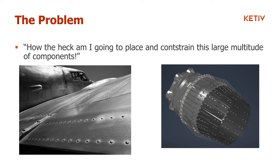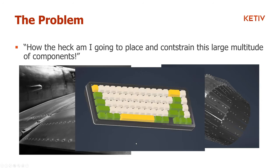Some of the people on the call are probably already looking at these pictures on the screen thinking there's probably a polar symmetry there, some rectangular symmetry — you could probably use patterns and get away with it pretty well. But what if you had a keyboard like this? This is a 65% keyboard and there are a lot of individual components to constrain in place.